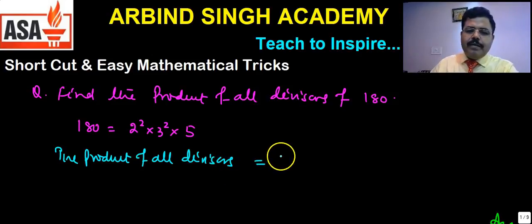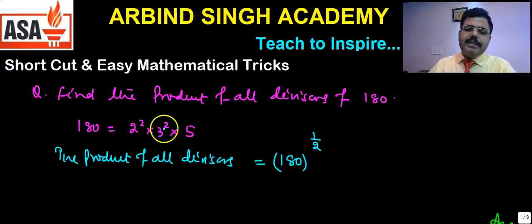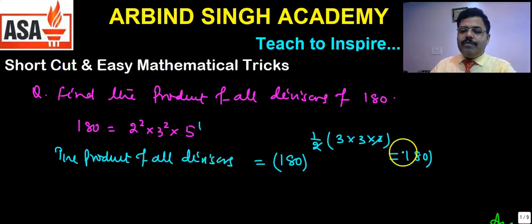The product will be 180 to the power of half the number of divisors. The number of divisors can be obtained by increasing each power by 1 and multiplying: (2+1) × (2+1) × (1+1) = 3 × 3 × 2 = 18. Half of that is 9, so 180⁹ is the product of all divisors.